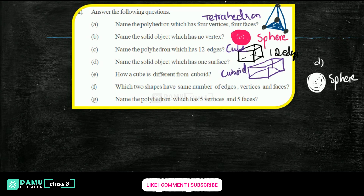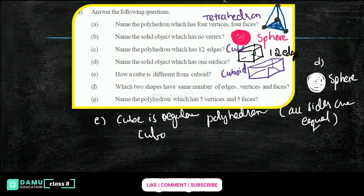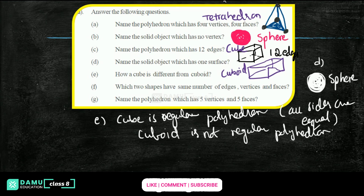Next one — E: how is a cube different from a cuboid? Cube is a regular polyhedron. Regular means all the sides are equal — all sides are equal in length, like a square. Cuboid is not a regular polyhedron.